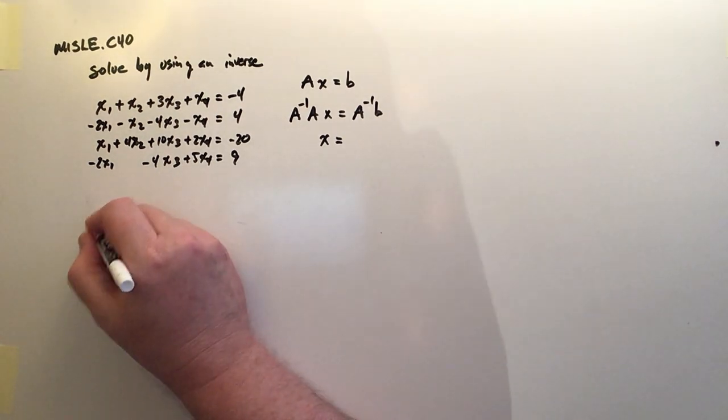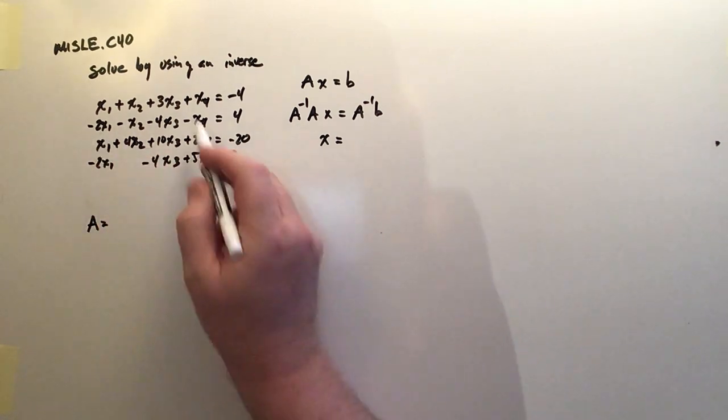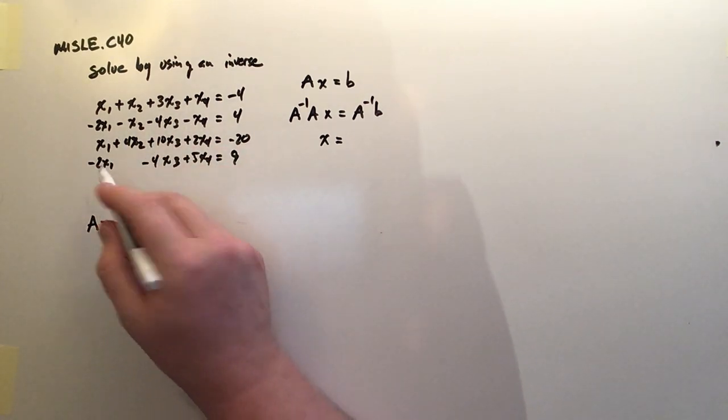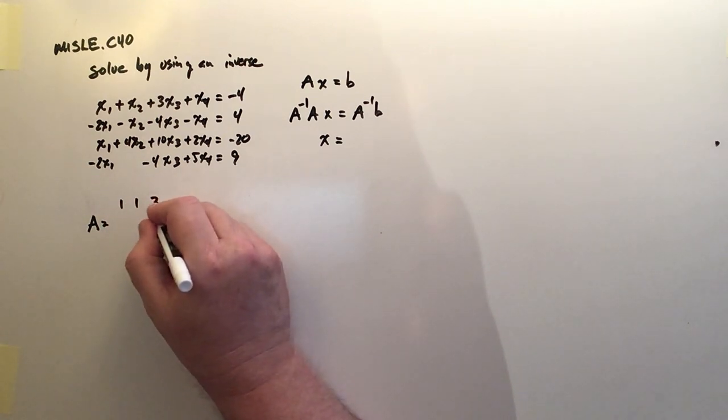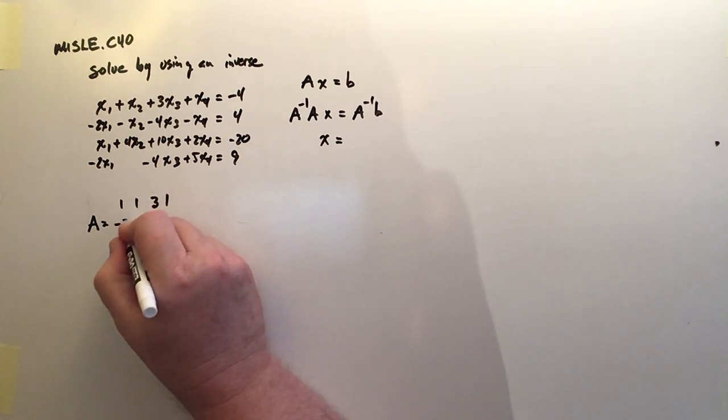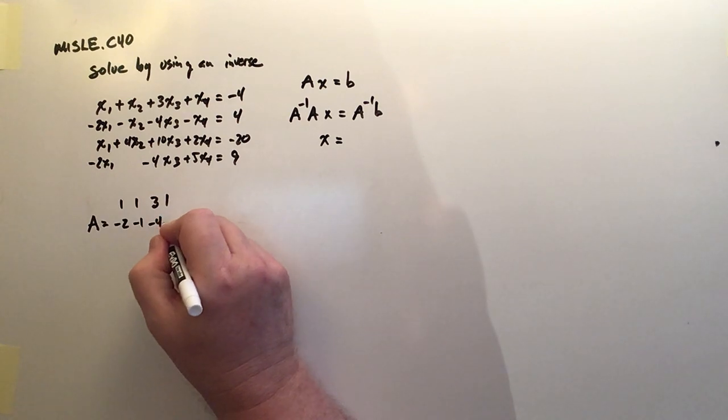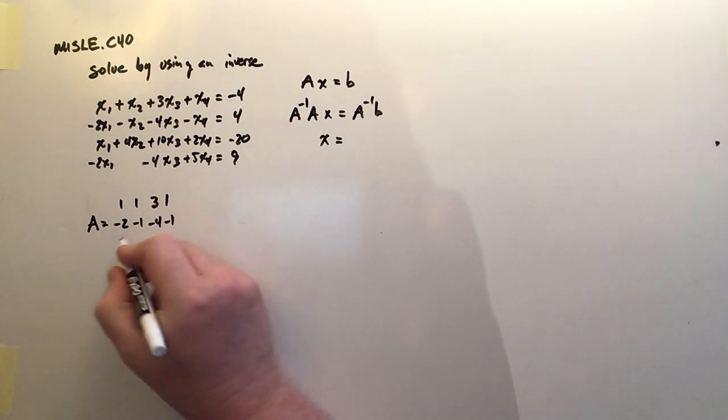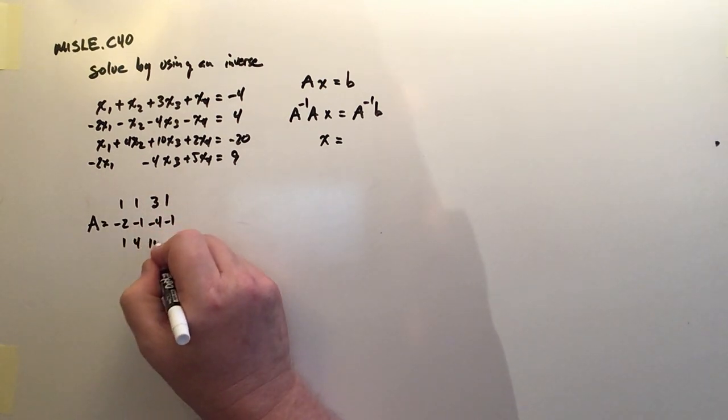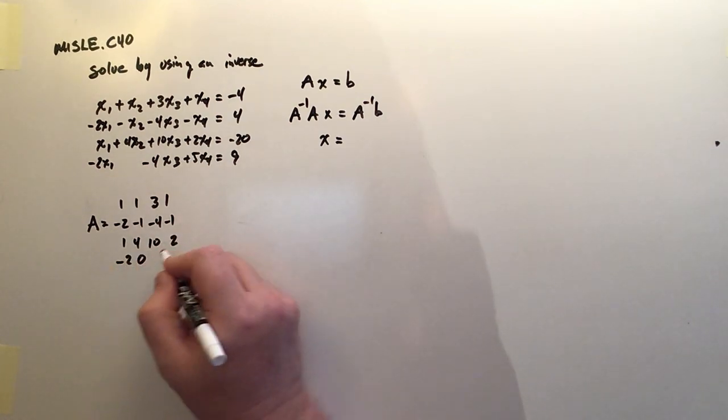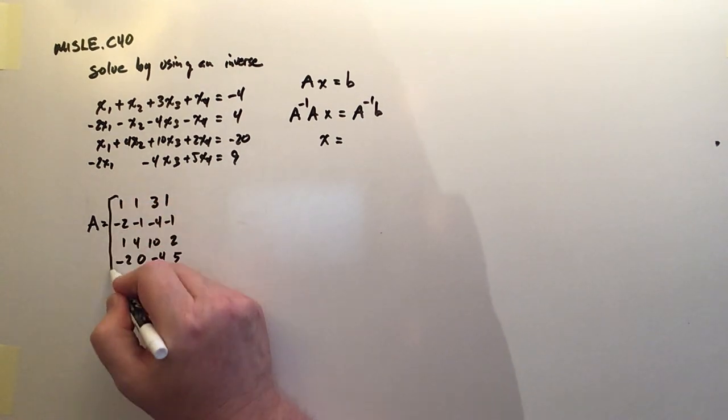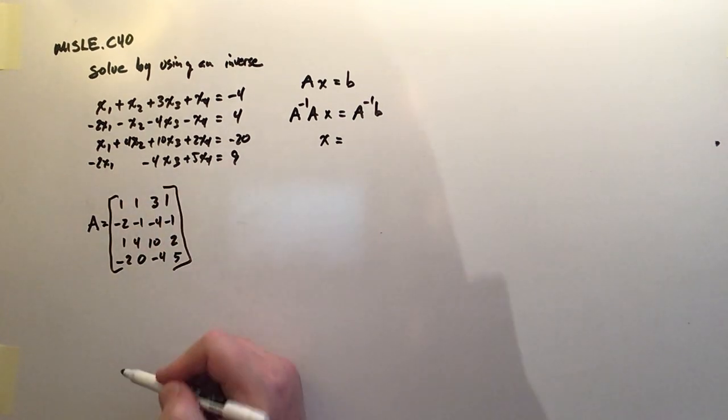So what we're going to do first is just write the A matrix just to show you the coefficient matrix. So it's going to be 1, 1, 3, 1, negative 2, negative 1, negative 4, and negative 1, 1, 4, 10, 2, and negative 2, 0, negative 4, 5. So this is the 4 by 4 matrix. That's matrix A.